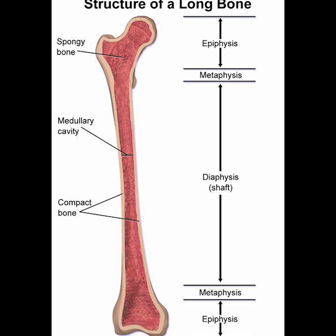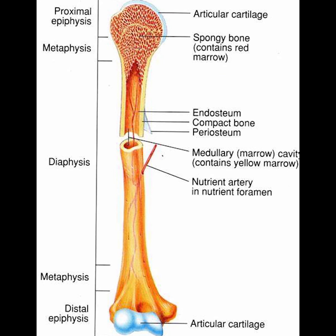The long bone category includes the femora, tibia, and fibulae of the legs, the humeri, radii, and ulni of the arms, metacarpals and metatarsals of the hands and feet, the phalanges of the fingers and toes, and the clavicles or collarbones.